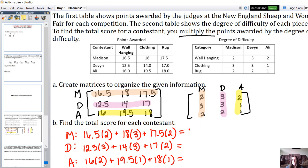Madison got a score of 122. Devon got a score of 113.5. And Allie got a score of 69.5. So the winner here was Madison.